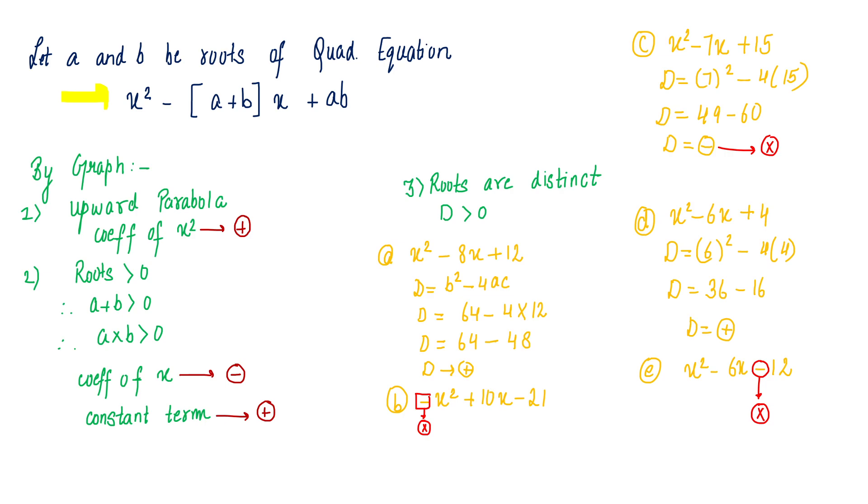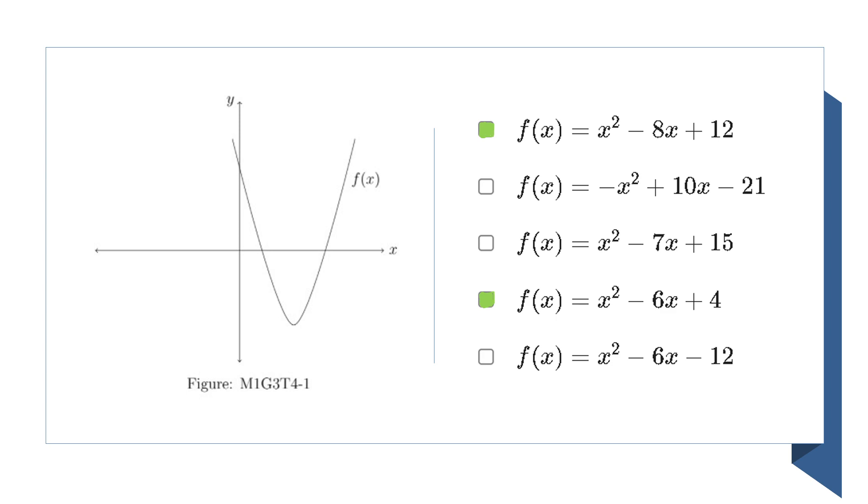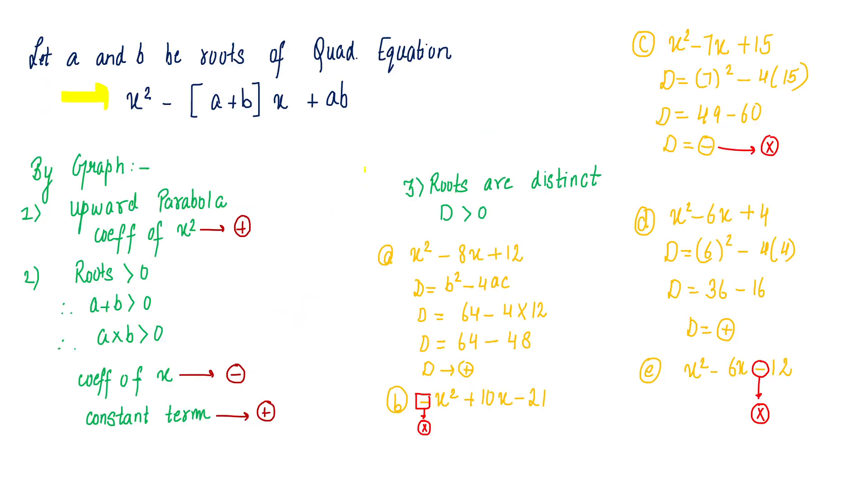Now by the graph, what I can say is that both the roots are positive. The parabola is an upward parabola, so the x squared coefficient will be positive.